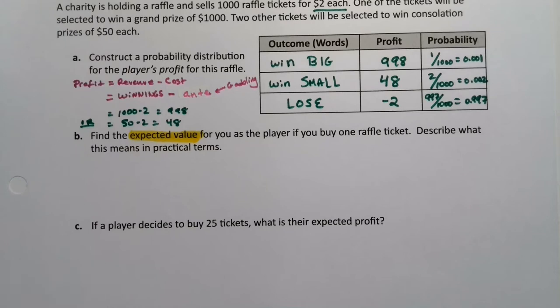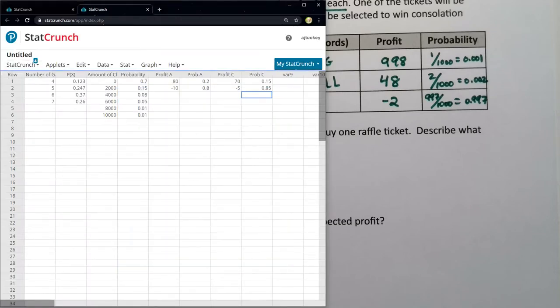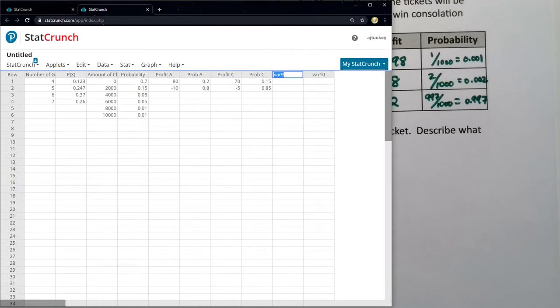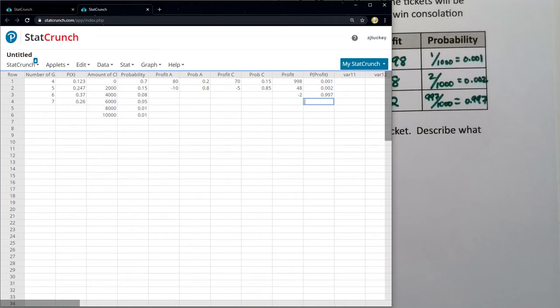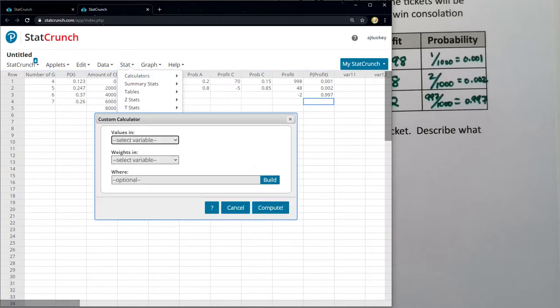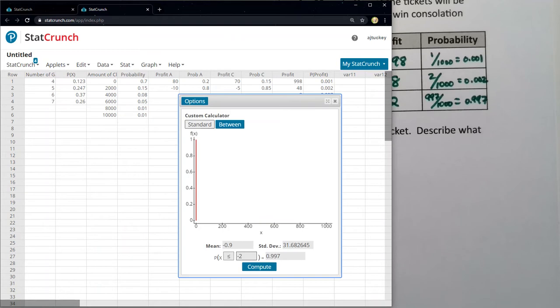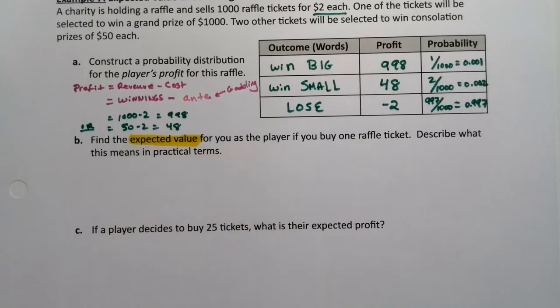And one last time, let's show how to do it in StatCrunch. So it's going to be the stat calculator that we're using here. So we'll go down here to profit, probability of profit. I'm just trying to name these different things. So it makes it easier for me to find. So this is 998. This is 48. And this is negative two. This is 0.001, 0.002, and 0.997. So when I go to stat calculators custom, my values are on the very last profit and my weights are in that very last probability. And I click compute and there it is negative 0.9, same value that the calculator found.